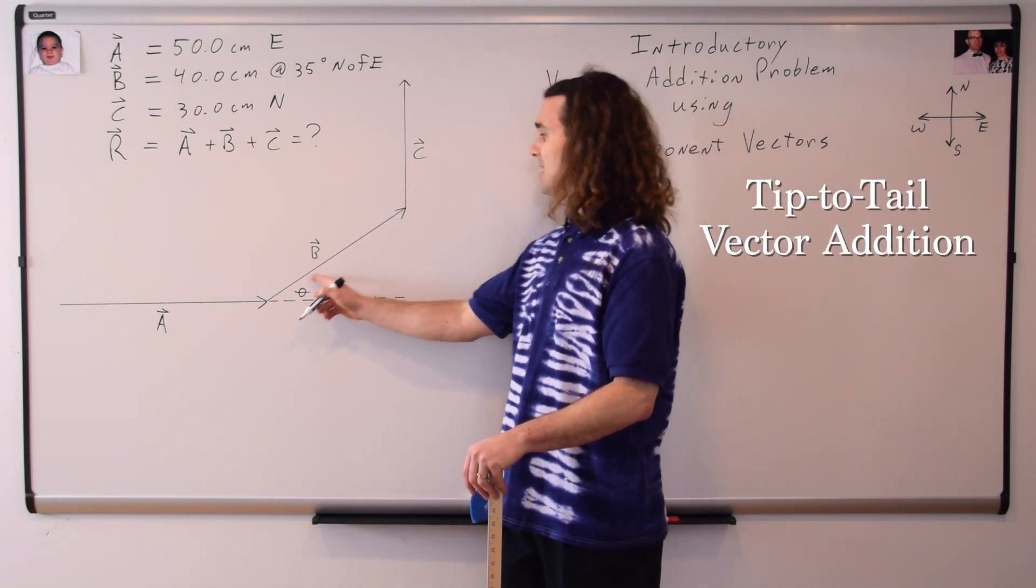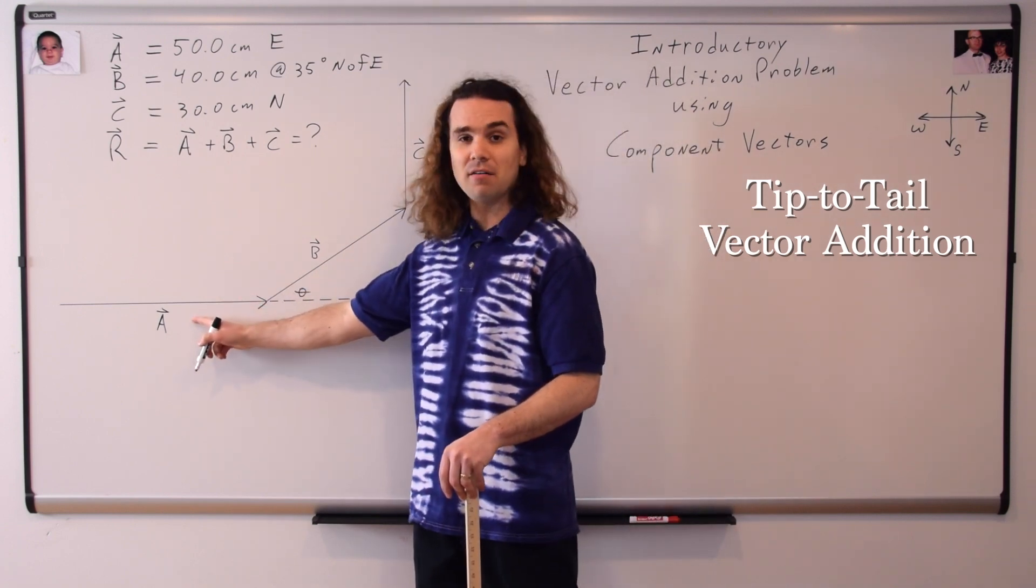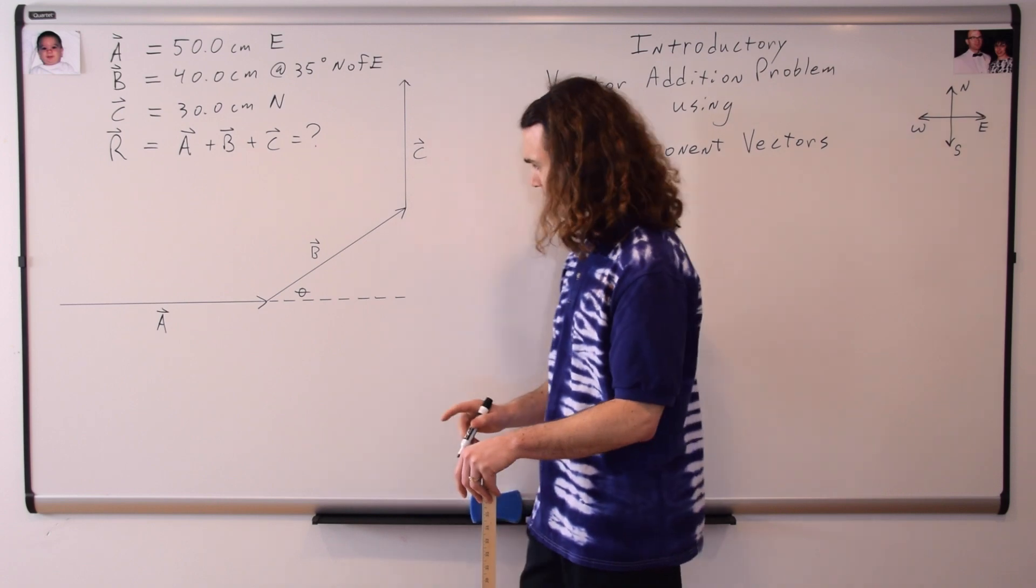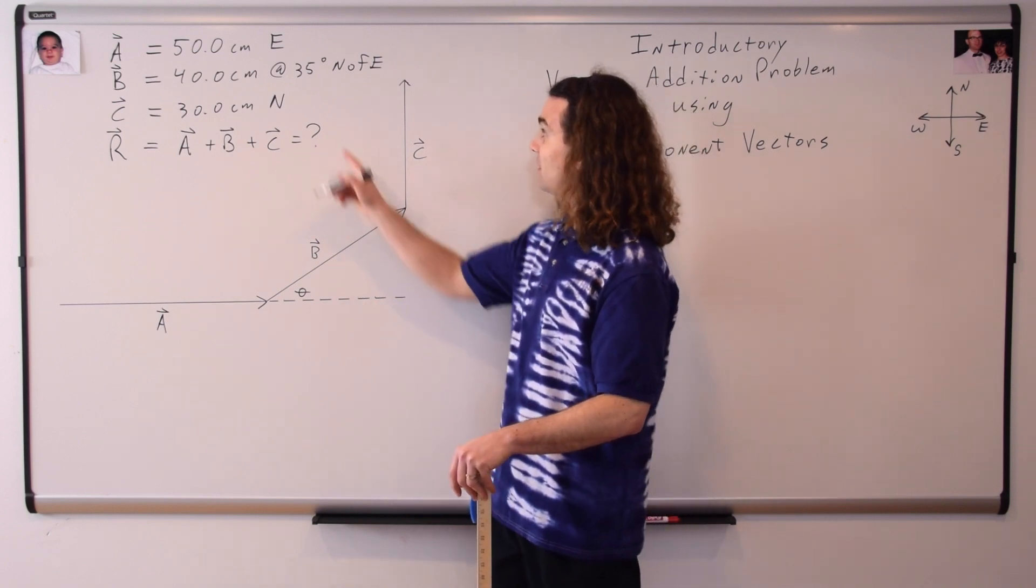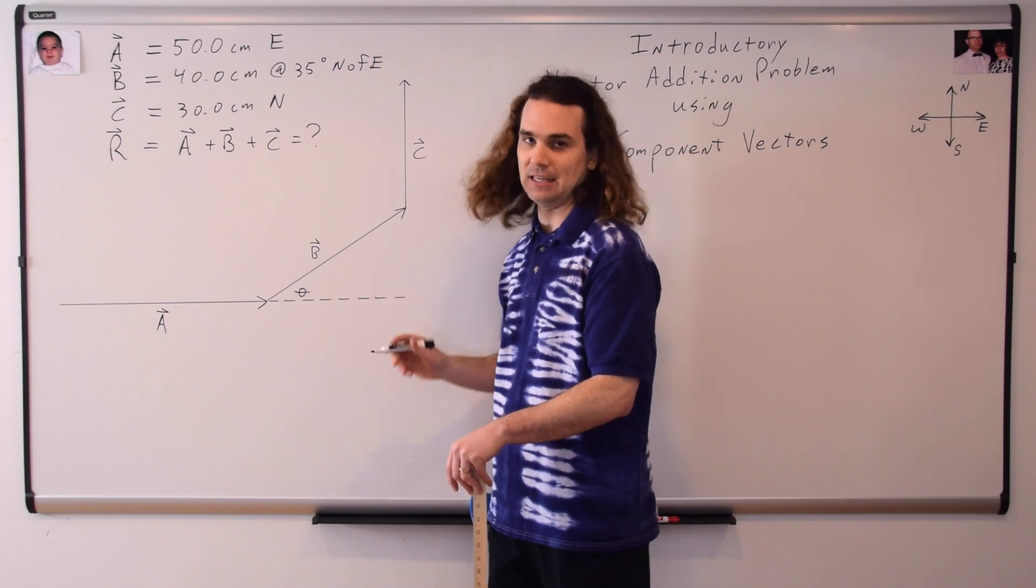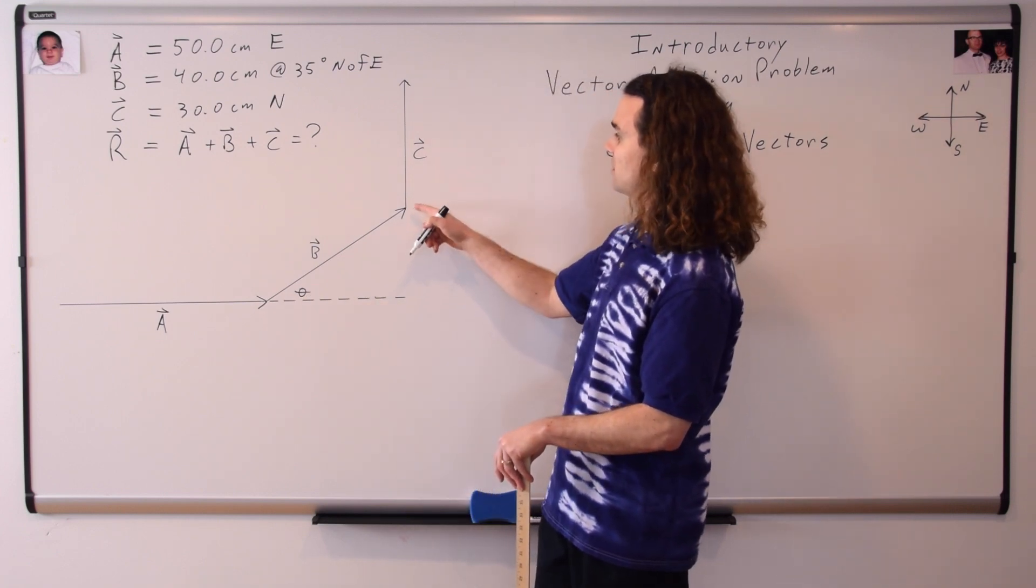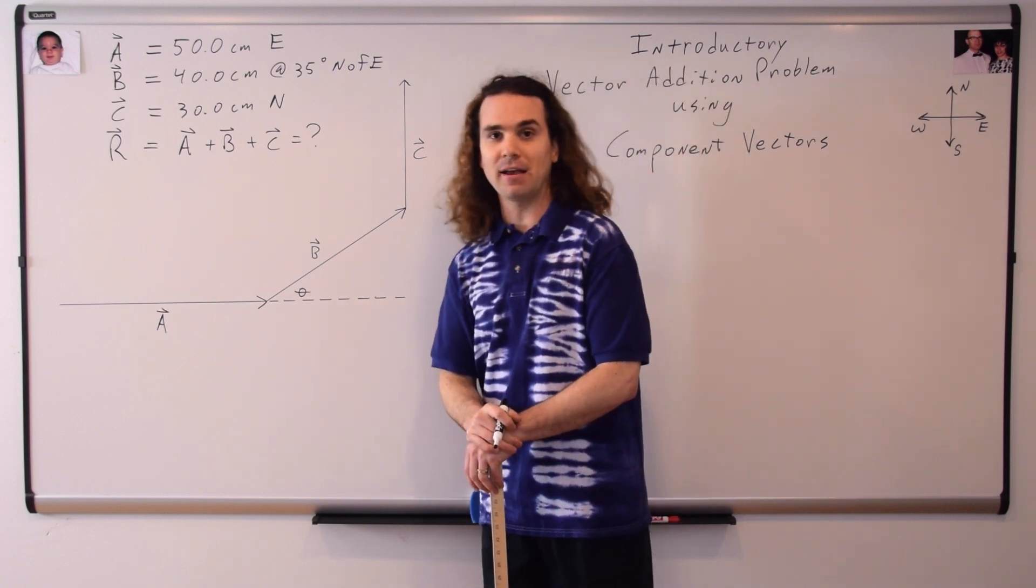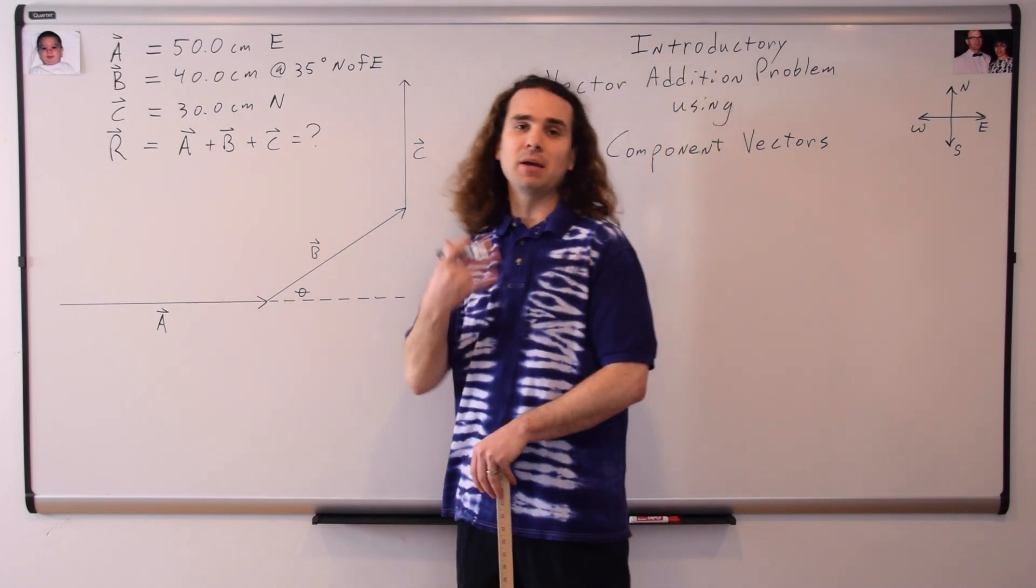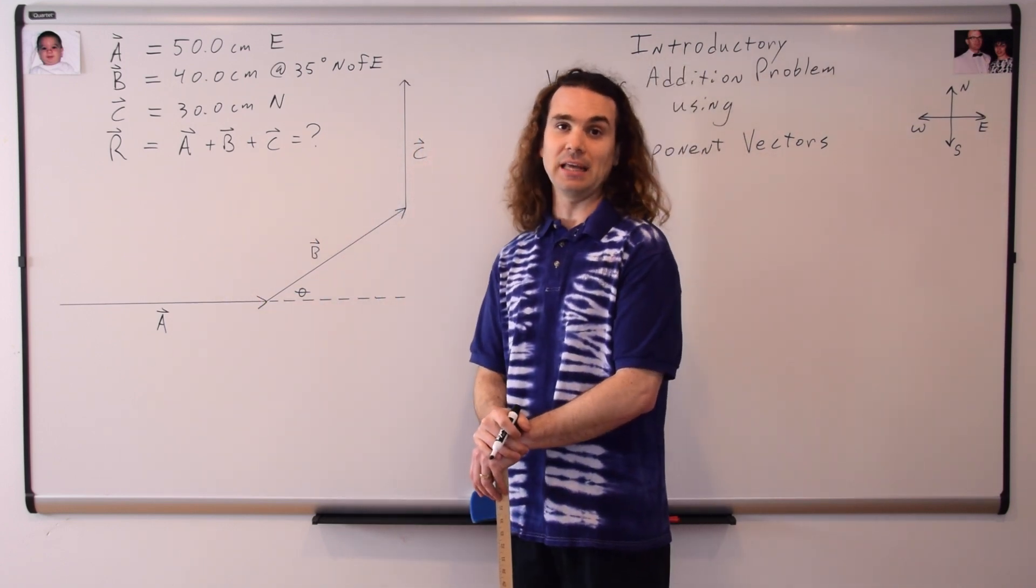Notice that B is about four-fifths the length of A, because it represents 40 centimeters in length instead of 50 centimeters in length. And we have our angle here, which is 35 degrees north from east, or north of east. And vector C, the tail of vector C is on the tip of vector B, C is northward, and is only three-fifths the length of A, because it represents 30 centimeters in length.